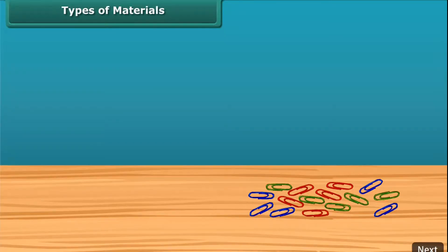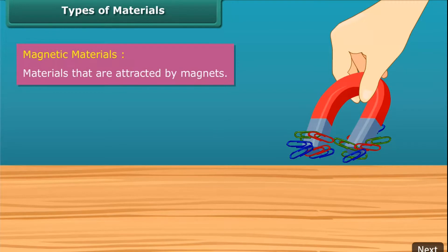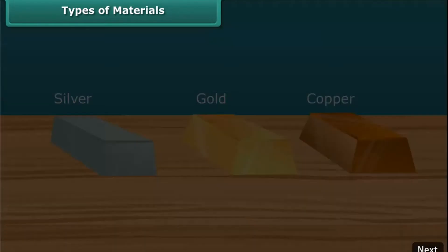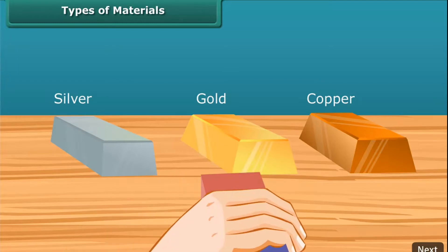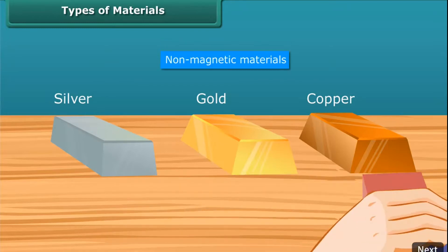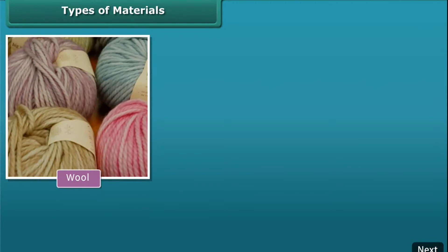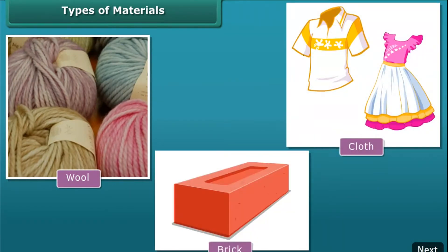Types of materials. Now let us look at the types of materials. Materials that are attracted by magnets are called magnetic materials — for example, screws, nuts, and bolts are magnetic materials. Materials that are not attracted by magnets are called non-magnetic materials — for example, wool, cloth, and bricks are non-magnetic materials.